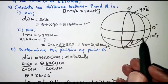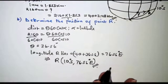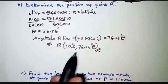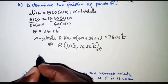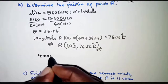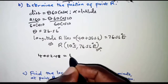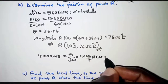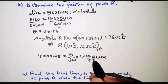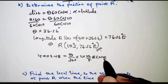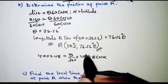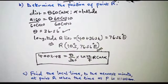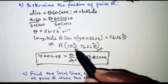We could also find theta using the distance in kilometers with the formula: distance equals theta over 360 times 2 pi R cos alpha. With distance 4002.48 km, R as 6370, and alpha as 10 degrees, this also gives theta equal to 36.56 degrees, which we can then use to get the same position of R.